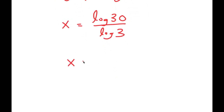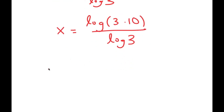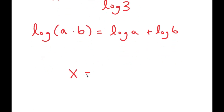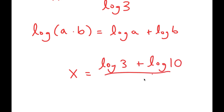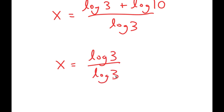Now, log 30 — I'm going to rewrite that as log of 3 times 10. If I have something in the form log of a times b, this is equal to log a plus log b. So log of 3 times 10 is equal to log 3 plus log 10. Now I have this over log 3.